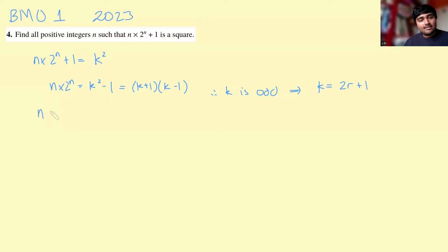Okay, let's plug this back in. So n times 2 to the n equals k plus 1 will be 2r plus 1 plus 1, so 2r plus 2, and then k minus 1 will just be times 2r. I can now divide both sides by 4, so I get n times 2 to the n minus 2, because 4 is 2 squared, so I can take off 2 from the power, and this would just be r plus 1 times r. Great.